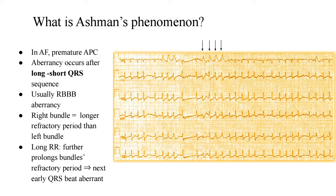Whenever you have an ECG of wide complex tachycardia, here are 10 questions that cover pretty much everything you're looking for in that ECG and in that patient. In this video, we will deal with only the first three questions. In the next one, we will deal mainly with the morphological criteria of VT versus SVT. Remember, there is also a clinical criteria where you look for blood pressure and cannon waves.